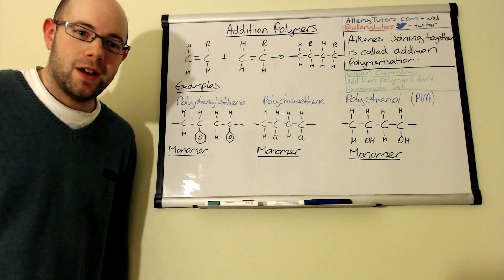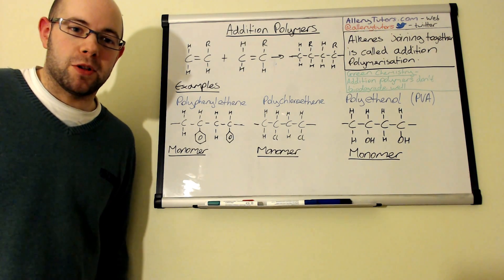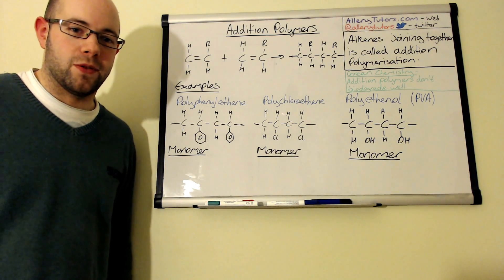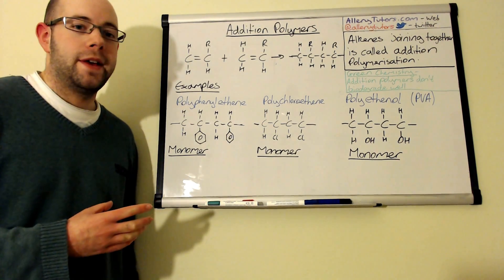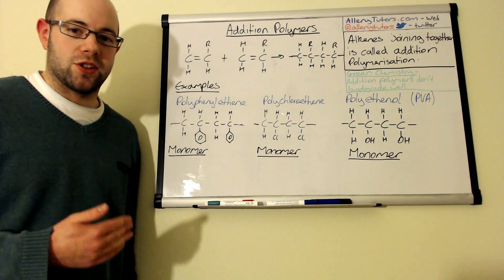Addition polymers are made up from monomer units and we can join them together to form long chain molecules that we call polymers.